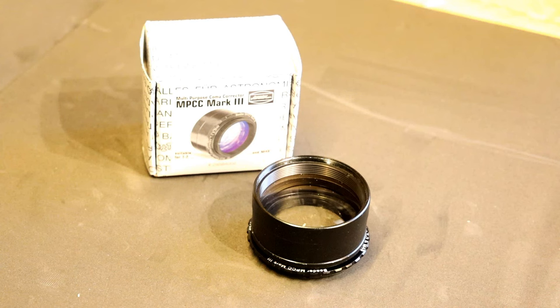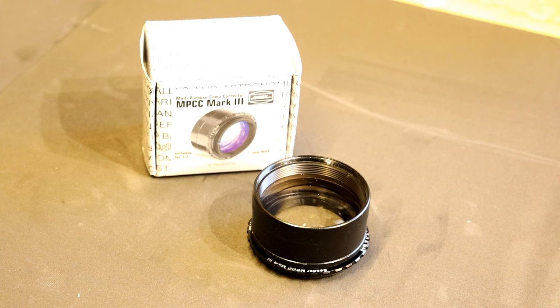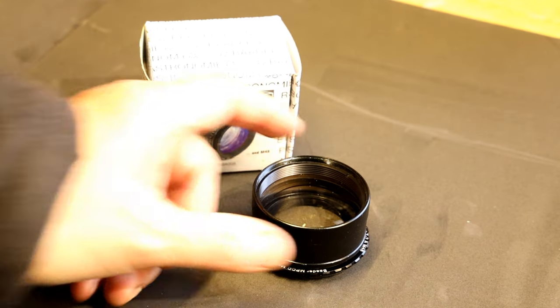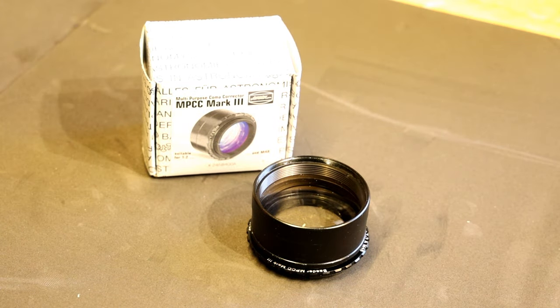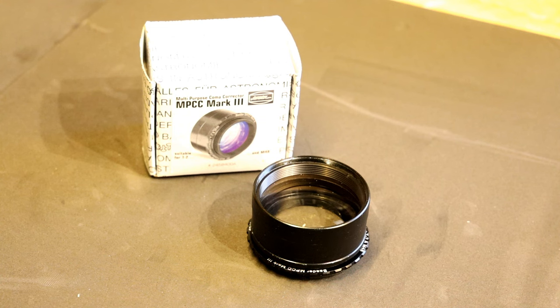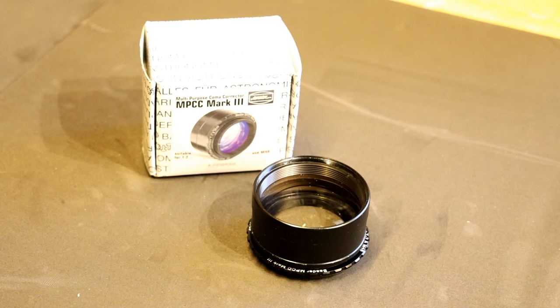With a Newtonian scope, one consideration is you may need a coma corrector so you don't get egg-shaped stars at the end of your field of view. You add one of these to your imaging train. The Baader MPCC Mark 3 is about 135 pounds. Once you add it to your imaging train, you need a 55 millimeter back focus to your sensor, but it does give you really nice shaped stars. So it is worth the money, especially if you're going to use your scope for astrophotography.